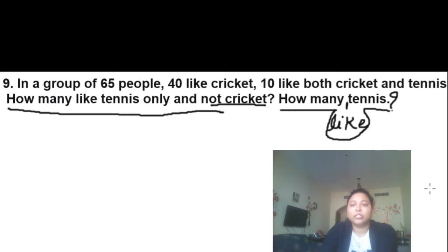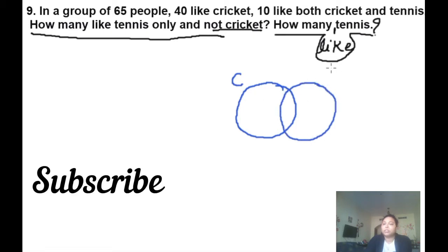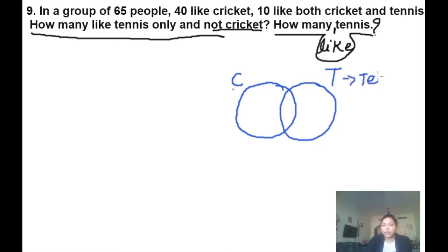First we will understand this question with a Venn diagram. The first set is cricket, we will denote this by C, and one set is tennis, we will denote this by T. This is C and this is T. This is for cricket and this is for tennis.